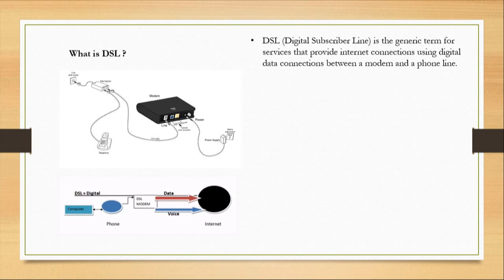Dial-up connections access computer systems or services remotely via telephone line. In dial-up connections, we cannot use internet and phone simultaneously, but in DSL we can use phone and internet simultaneously. Here I can show you the diagram of DSL.